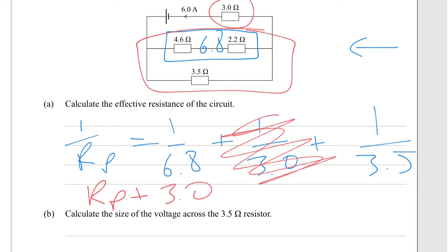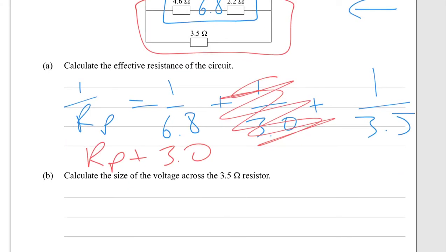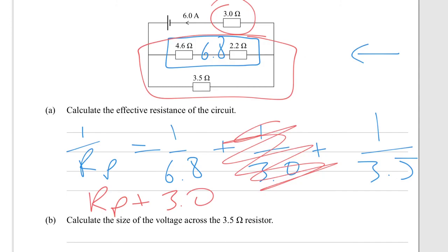Part B is: calculate the size of the voltage across the 3.5 ohm resistor. Scroll back down just a little bit. You can see that the 3 ohm resistor here with 6 amps running through it...